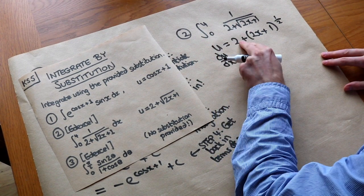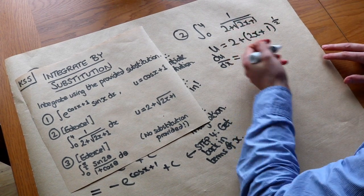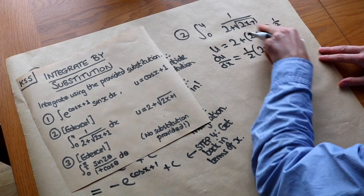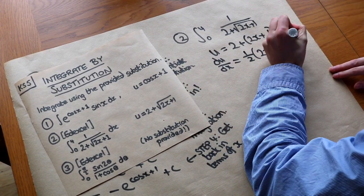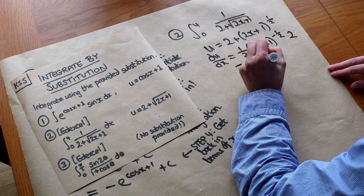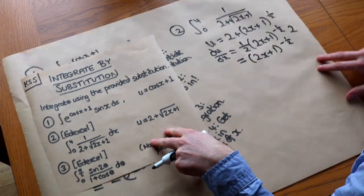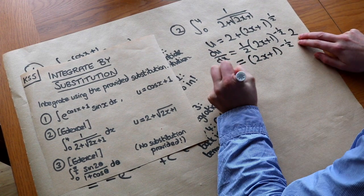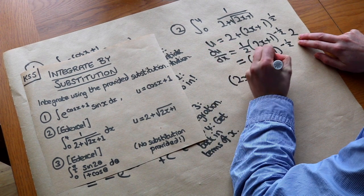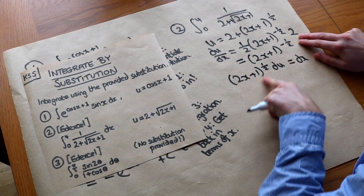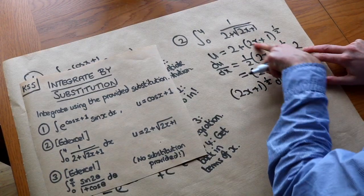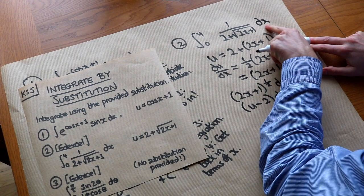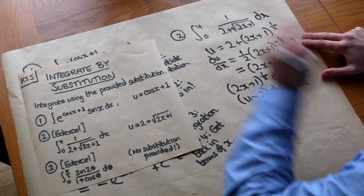So du over dx: the 2 disappears, and then (2x+1) to the half differentiates as half times (2x+1) to the minus half, times by 2 from the inner function — the half times 2 gives 1 — so we get (2x+1) to the minus half. Making dx the subject: dx equals (2x+1) to the positive half times du. And since (2x+1) to the half is just u minus 2, we have dx equals (u minus 2) du. Everything will be in terms of u when we substitute.